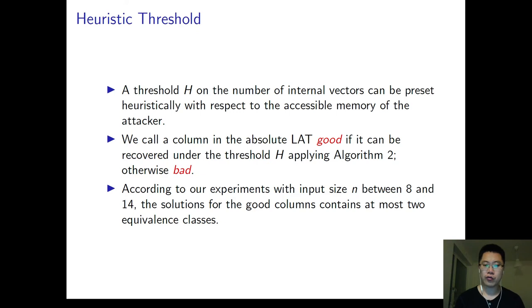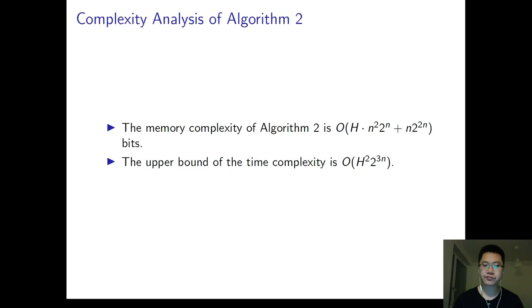According to our experiments, the solutions for the good columns usually contain at most two equivalence classes. We analyze the complexity of the algorithm here, and we give the upper bound of memory complexity and time complexity.